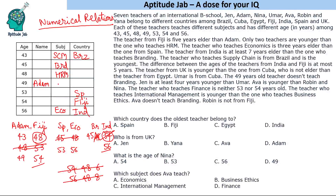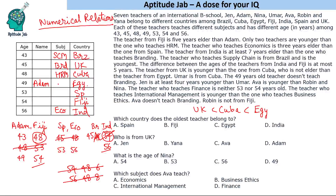The teacher from UK is younger than the one from Cuba, who is not elder than the teacher from Egypt. That means UK is younger than Cuba, which is younger than Egypt. The remaining countries to assign are UK, Cuba, and Egypt, covering the remaining age slots. We have now filled those country assignments as well.